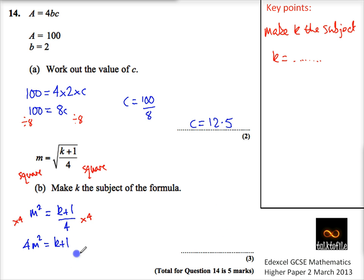And then the last step I'm going to do is I'm going to take away 1 from both sides of the equation. So that gives me 4m² - 1 is equal to k.